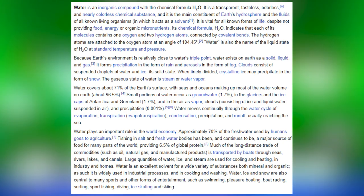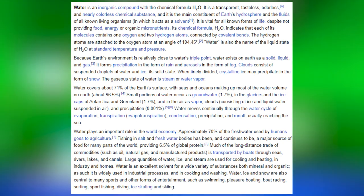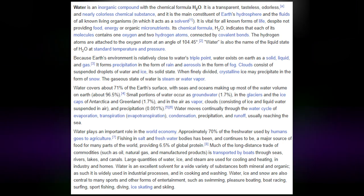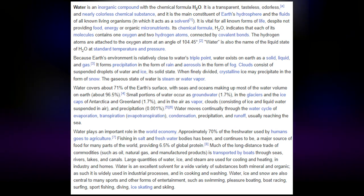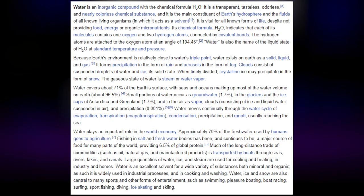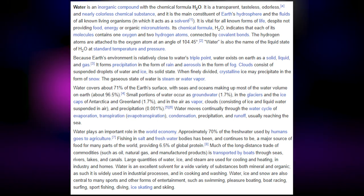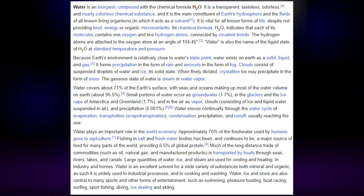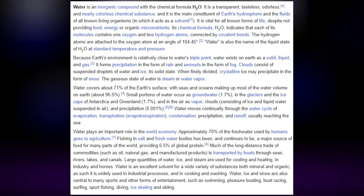Because Earth's environment is relatively close to water's triple point, water exists on Earth as a solid, liquid and gas. It forms precipitation in the form of rain and aerosols in the form of fog. Clouds consist of suspended droplets of water and ice. When finely divided, crystalline ice may precipitate as snow. The gaseous state of water is steam or water vapor. Water covers about 71% of the Earth's surface, with oceans making up about 96.5% of the volume. Small portions occur as groundwater (1.7%), glaciers and ice caps (1.7%), and as vapor, clouds and precipitation (0.001%).